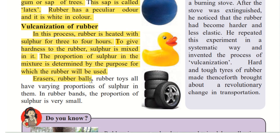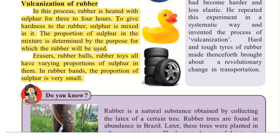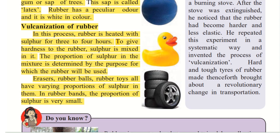Erasers, rubber balls, and rubber toys all have varying — that is different — proportions of sulphur in them. In rubber bands, the proportion of sulphur is very small, and therefore we can stretch them. We can make them as big as we want; we can pull and stretch them. So that is how vulcanisation of rubber happens.